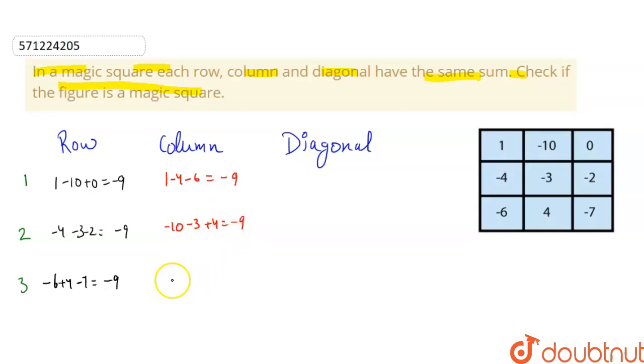And for column 3, the sum is 0 minus 2 minus 7, which is also minus 9. And for diagonal 1, the sum is 1 minus 3 minus 7, this is also minus 9.